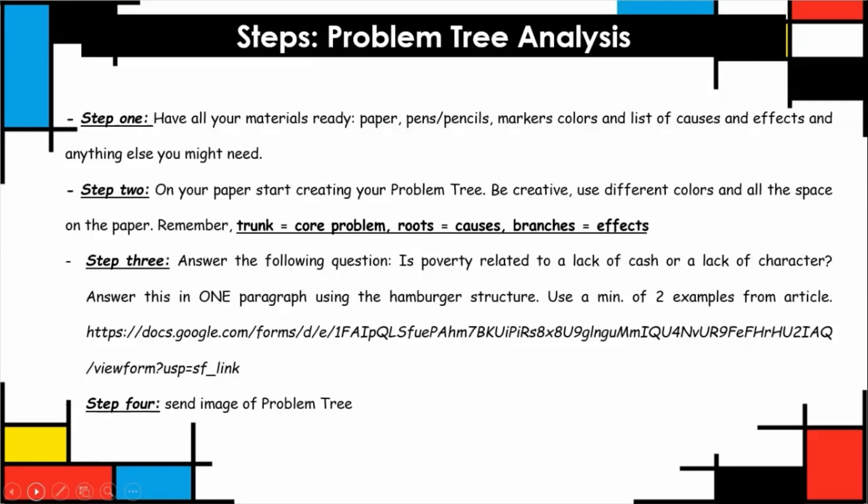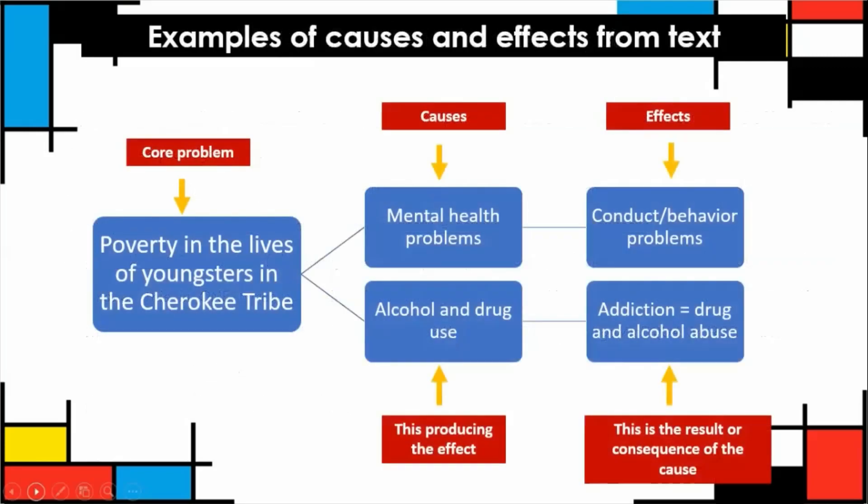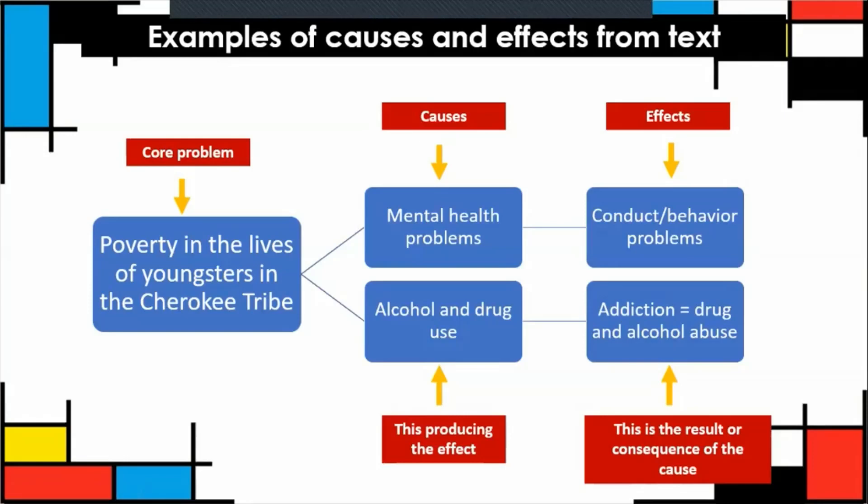I wanted to give you some examples so we could clarify what are causes and effects. First, everybody's gonna have the same core problem: poverty in the lives of youngsters in the Cherokee tribe. I've identified two causes—there's more than two, and if you have the same causes it's okay. One of the causes I identified was mental health problems, and another one was alcohol and drug use. These causes produce an effect. The effect for mental health problems are conduct problems and behavior problems, that means crime or defiance in school. Now the effect of alcohol and drug use is drug abuse and addiction. So remember, the causes produce an effect. The effects are the results or the consequence of the causes.